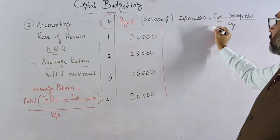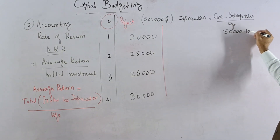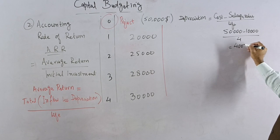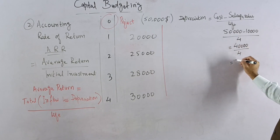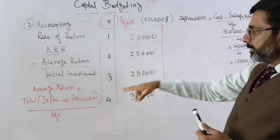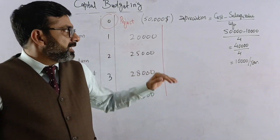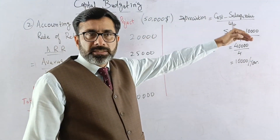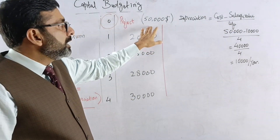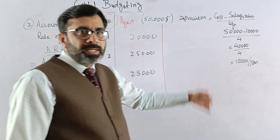The depreciation is calculated as: cost of asset minus salvage value, divided by useful life. So that is 50,000 minus 10,000, which is 40,000, divided by 4 years — giving us depreciation of 10,000 per year.